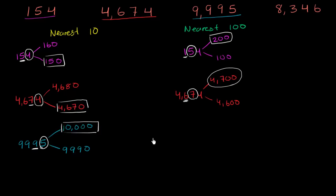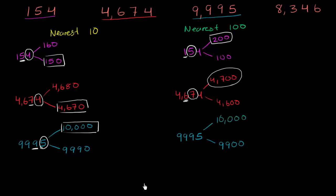Now let's round 9,995 to the nearest hundred. The multiple of 100 below this is 9,900, and the next multiple of 100 above it — if you add 100 to 9,900 — is once again 10,000. To decide whether to round up or down, we don't look at the ones place; we're rounding to the nearest hundreds, so we look one place to the right of the hundreds place, which is the tens place. If it's five or greater, we round up; if it's less than five, we round down. It is five or greater, so we round up to 10,000.